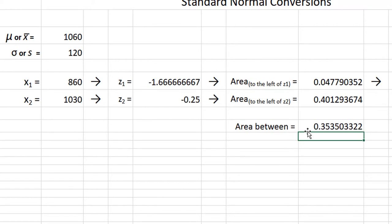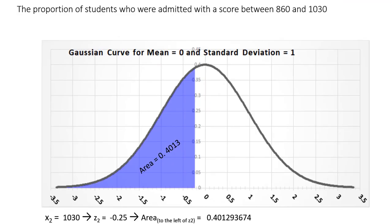Let's see what all of this looks like on a diagram. On the diagram, the 1030 SAT score corresponded with a z-value of exactly negative 0.25. And the area to the left, all the way into the tail, of a z-value of negative 0.25 is 0.40129.